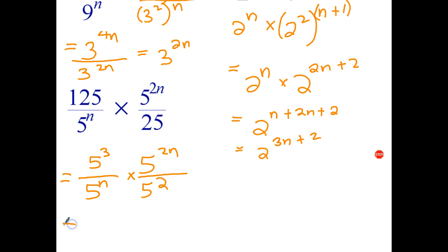So now we've written each of those expressions with base 5. Now let's go ahead and write that as a single fraction. So 5 cubed times 5 to the 2n in the numerator. Whoops, let's write a 5. My denominator is 5 to the n times 5 squared.